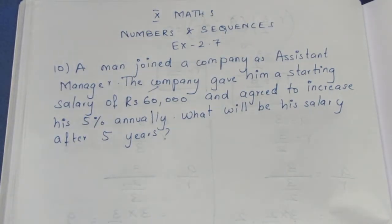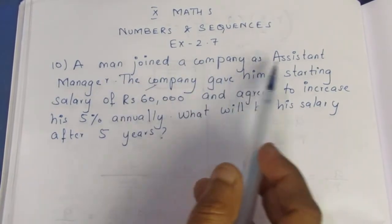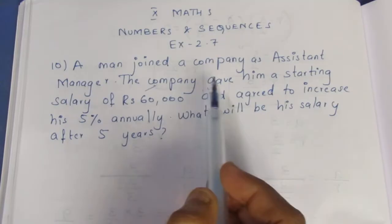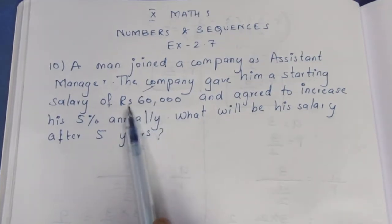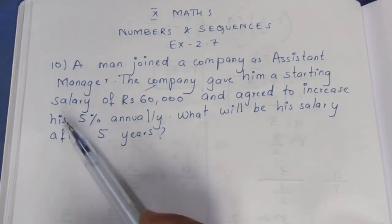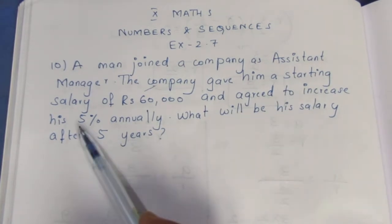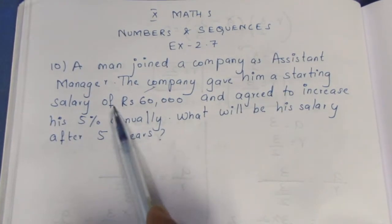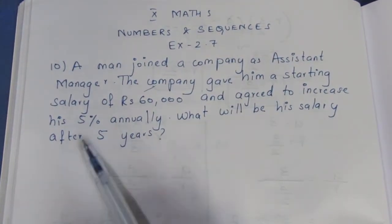Hello viewers, I am Maitli. In the 10th Maths Numbers and Sequences, Exercise 2.7, 10th sum video question: A man joined a company as assistant manager. The company gave him a starting salary of 60,000 and agreed to increase his salary 5% annually. What will be his salary after 5 years?